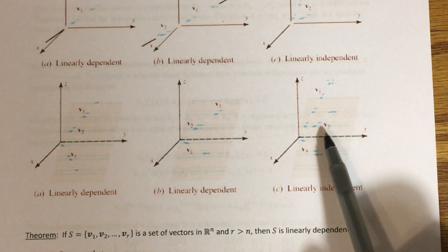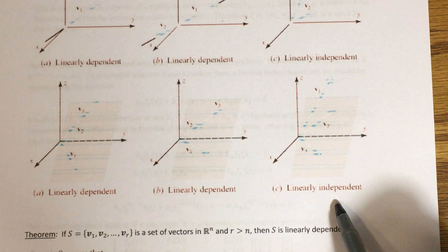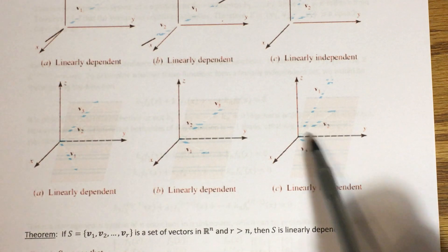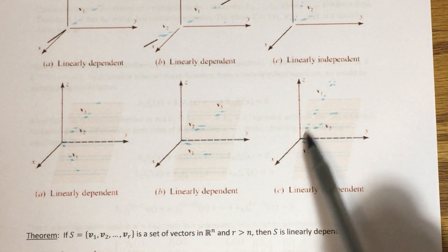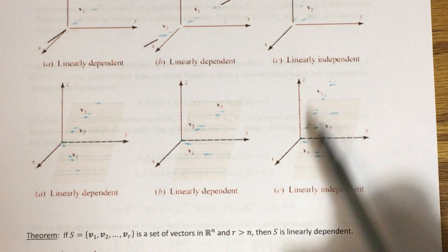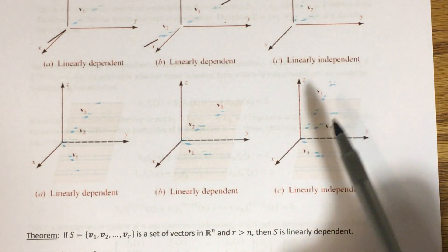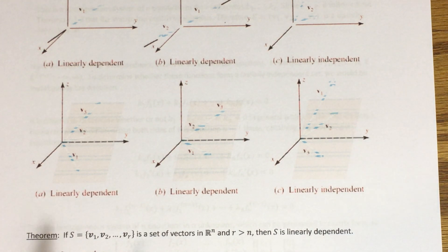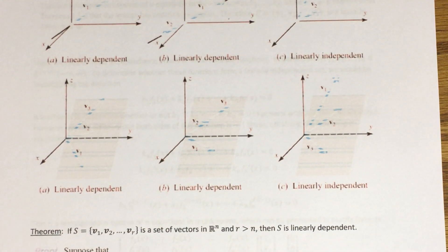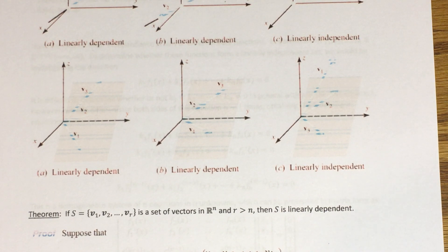The linearly independent case is where two vectors lie in the same plane but the third is not in that plane — it comes out of the plane somehow. In that case, the set is not linearly dependent. So three non-coplanar vectors in R3 form a linearly independent set. It's helpful to have this geometric intuition behind what we're talking about.